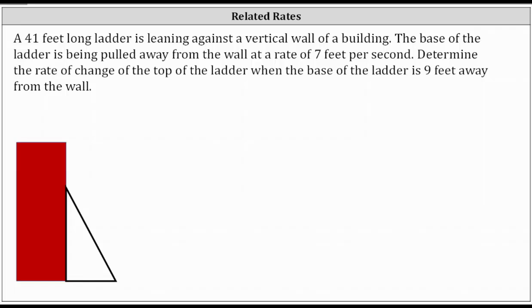Let's first label all three sides of the right triangle. Let's label the horizontal leg X, the vertical leg Y, and the hypotenuse, which would be the length of the ladder, Z. And we know Z, of course, is 41 feet.